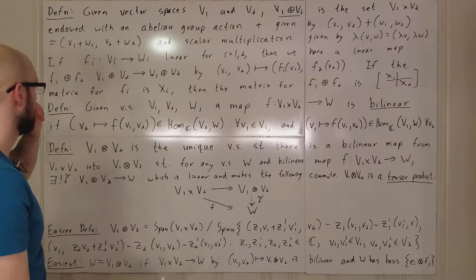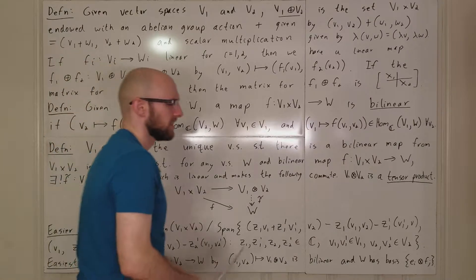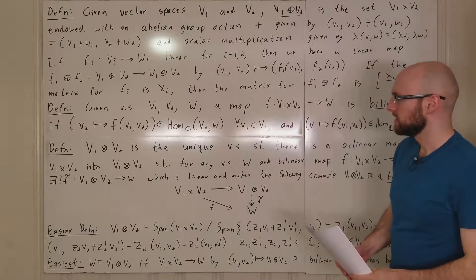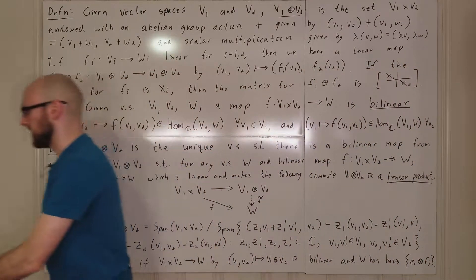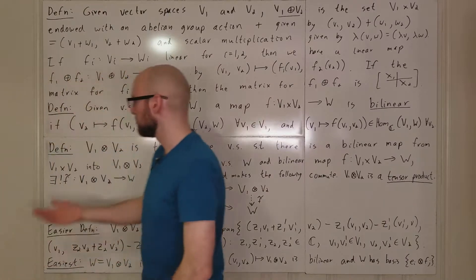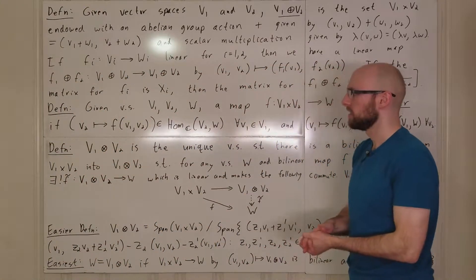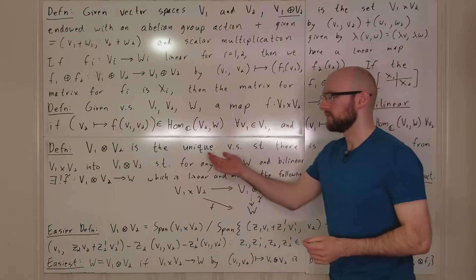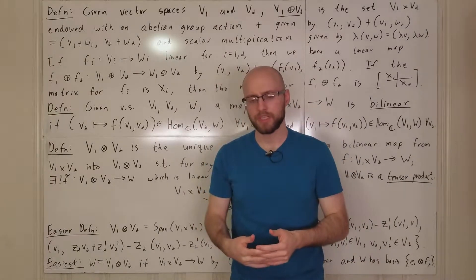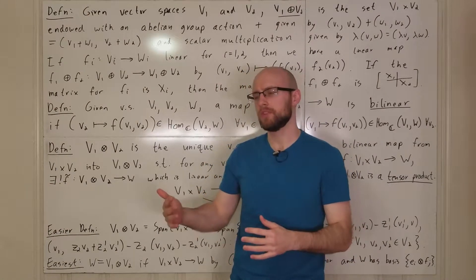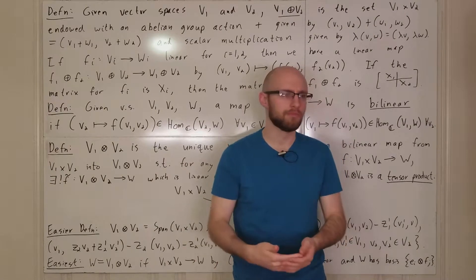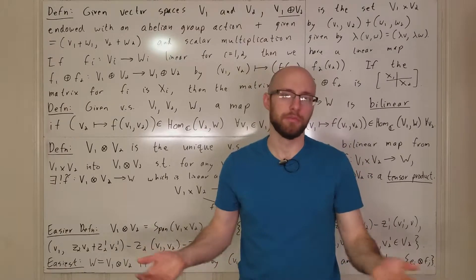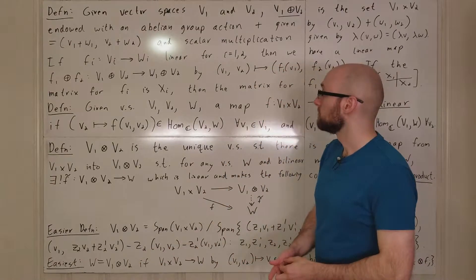And then we have tensor products. So tensor products are sort of weird. We have a couple definitions here. This is the most general definition, and I went to go look this up. And the thing about this definition is, it seems like it's presented at such a general level that it's typically accompanied by a lot fancier vocabulary that I'm not really familiar with yet.